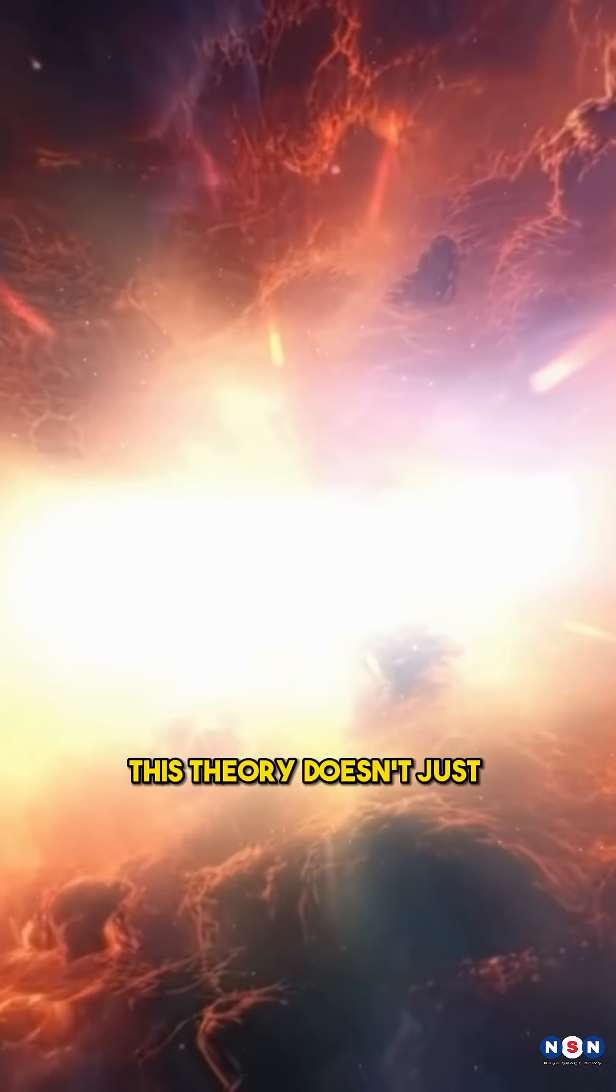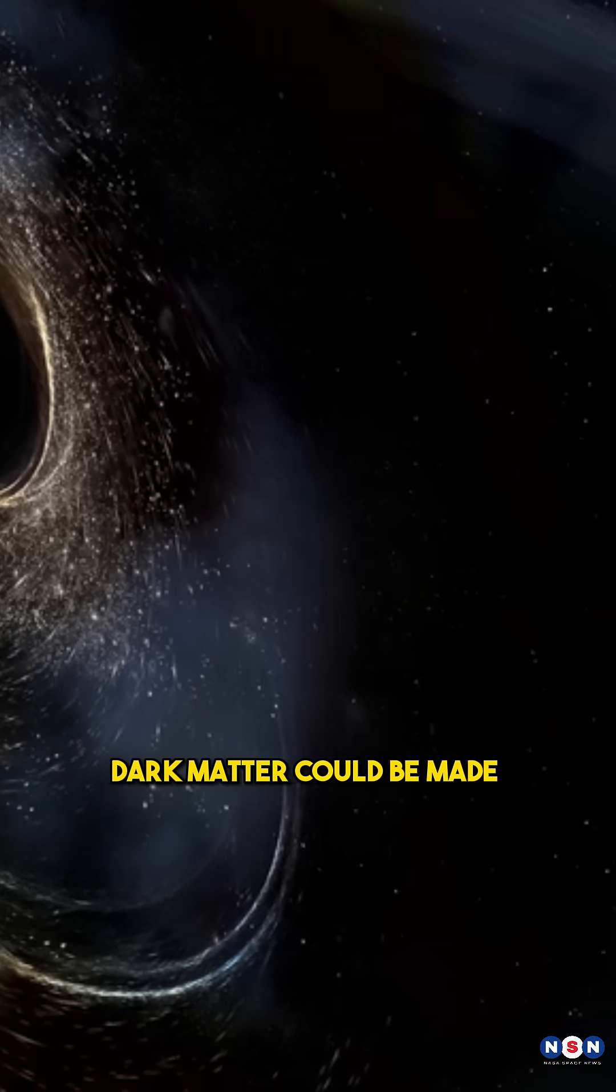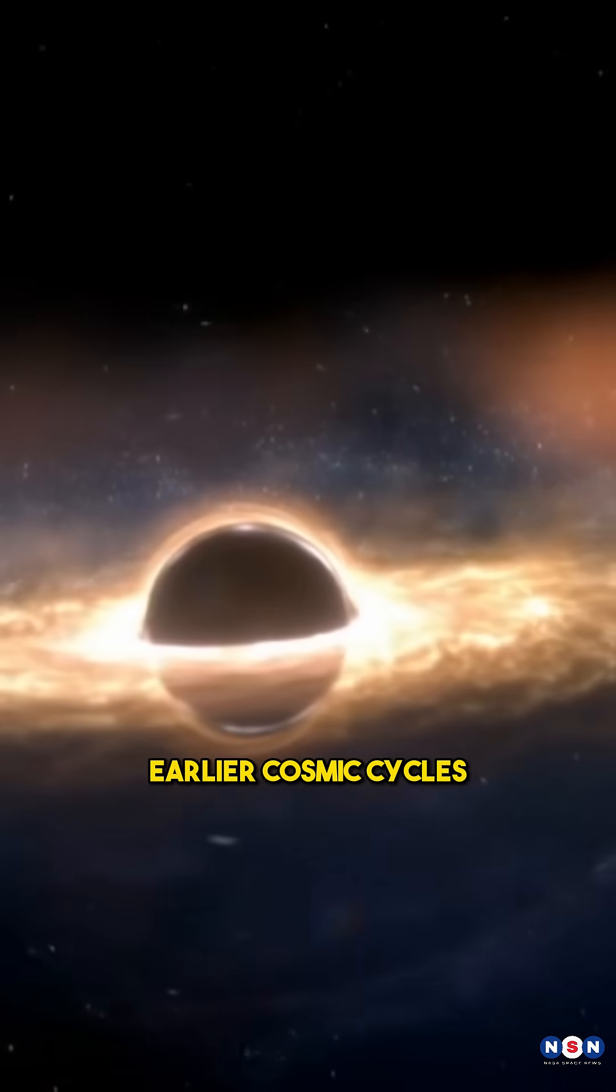This theory doesn't just redefine the beginning, it also offers a new explanation for dark matter. According to this idea, dark matter could be made up of primordial black holes formed in these earlier cosmic cycles.